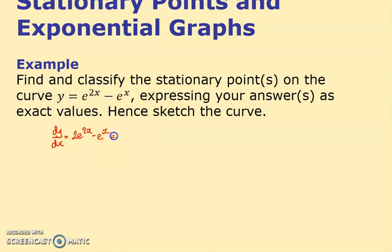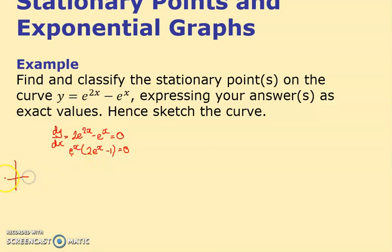It wants the stationary points, so set dy/dx = 0. It's better to put this in factorised form: e^x(2e^x - 1) = 0. The great thing about e^x is it's never equal to zero — you should know the graph of e^x gets closer and closer to zero but never touches. So e^x = 0 has no solutions.